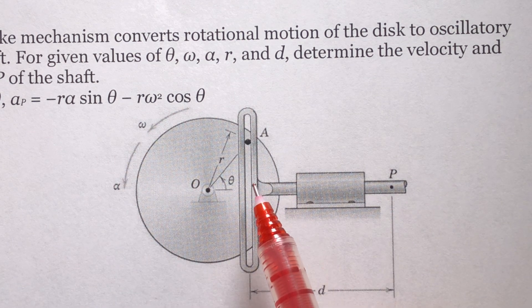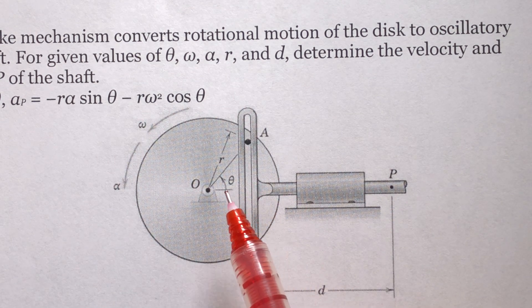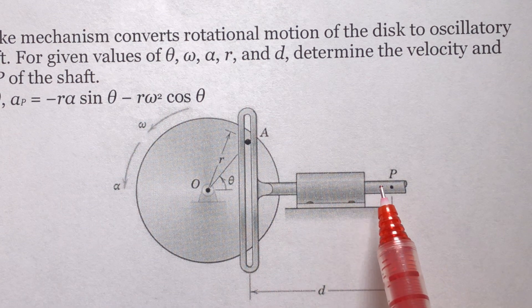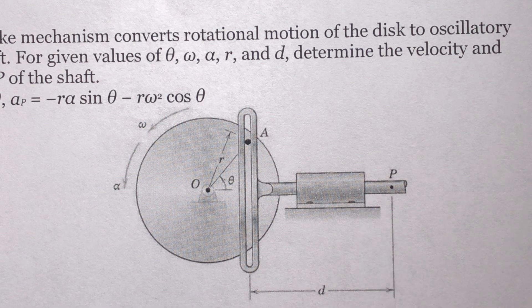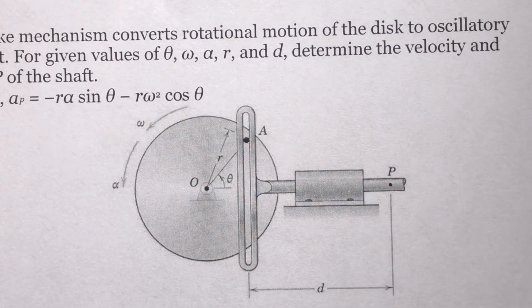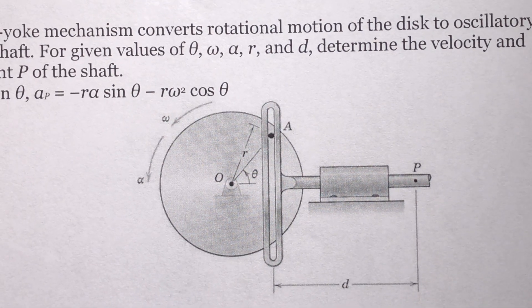If I take another derivative of it, I'm going to be able to find the relationship between theta double dot, or alpha, and the acceleration of P. So think about this for a few minutes — pause this video and do that, please.